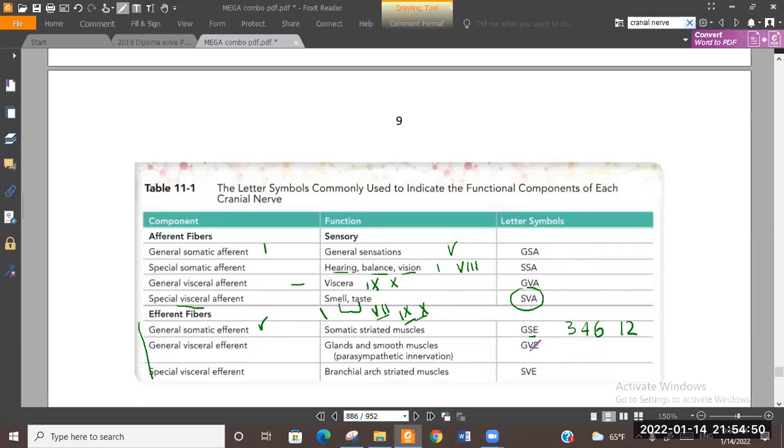General visceral efferent is parasympathetic. Special efferent means branchial - special different means branchial arch. Special somatic efferent - no, that's not right.